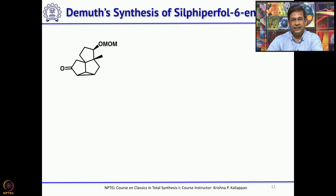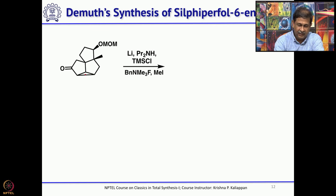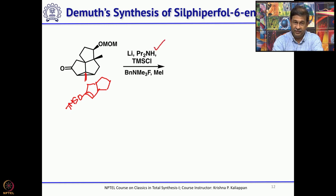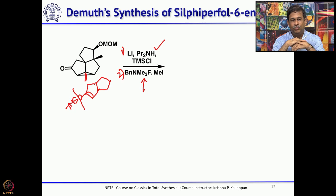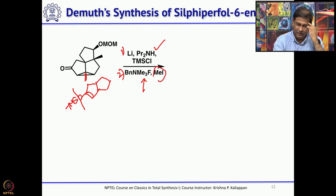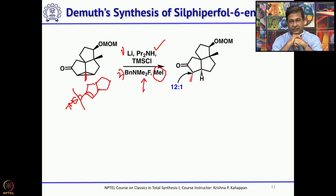The tetracyclic compound is then reductively opened using lithium diisopropylamine and TMS chloride. The cyclopropane is cleaved and forms the corresponding enol-TMS, because the enolate generated is trapped with TMS chloride. In the second step, the enol-TMS ether is cleaved with a fluoride source — specifically benzyltrimethylammonium fluoride — to generate the alkoxide, which is then quenched with methyl iodide to stereoselectively introduce the methyl group.